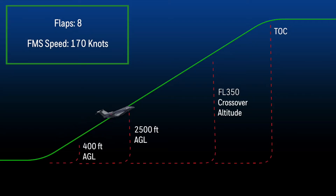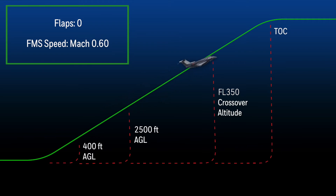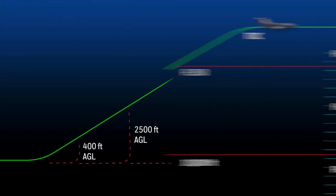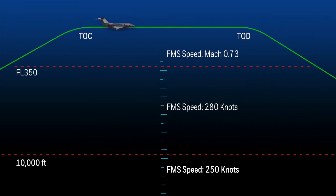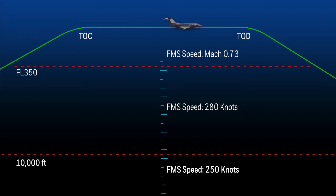As the aircraft continues the climb to altitude, the FMS target speed changes to Mach 0.60 at approximately flight level 350. When the aircraft reaches the cruise altitude, the target speed changes to the cruise speed set in the altitude and speed tab in the flight management window.